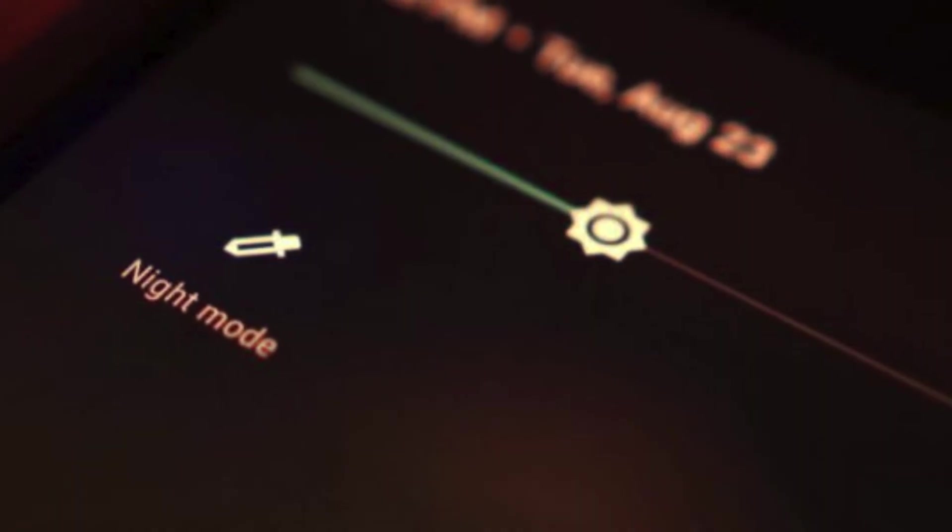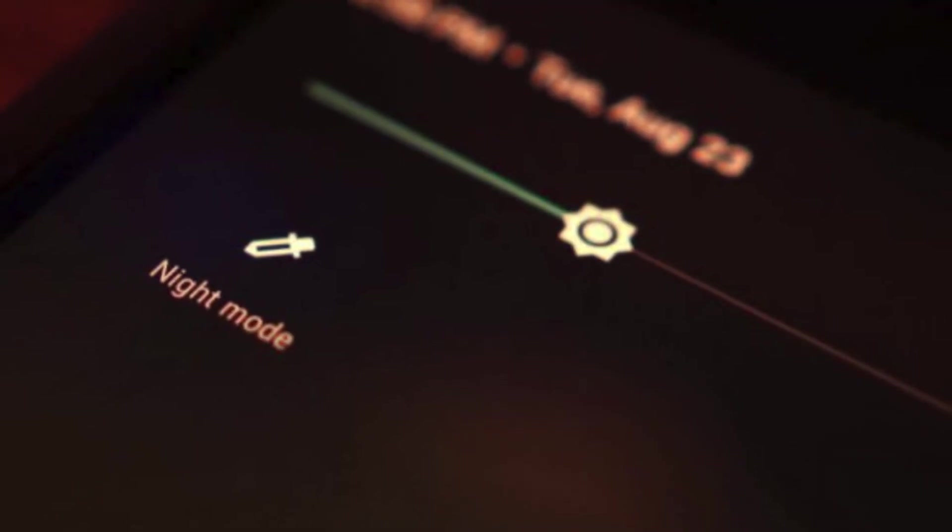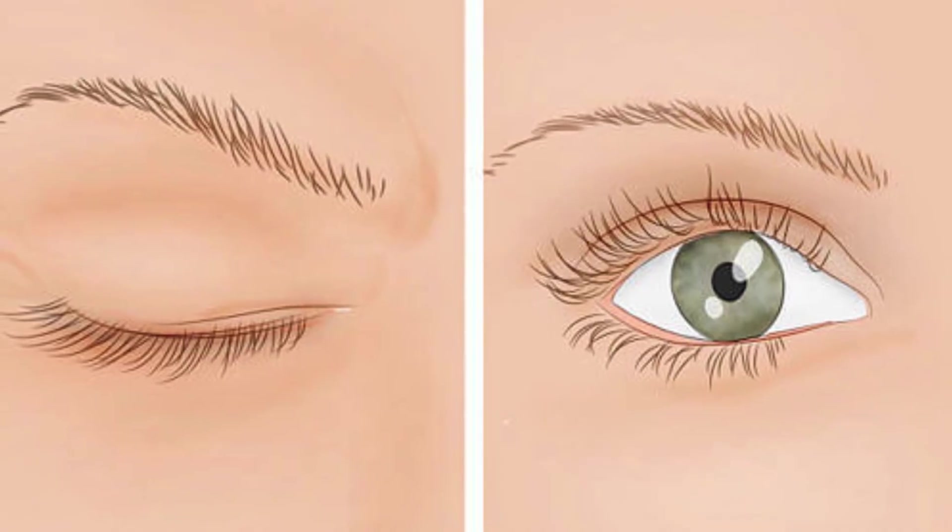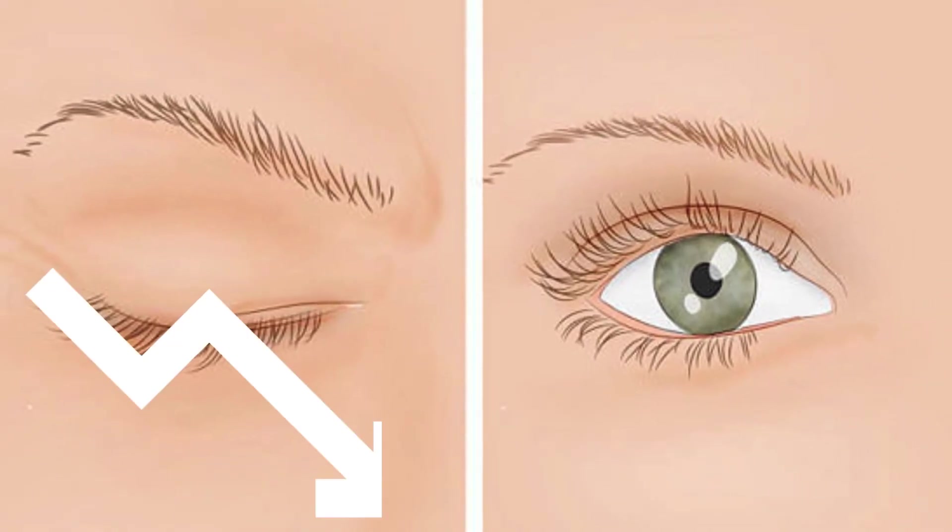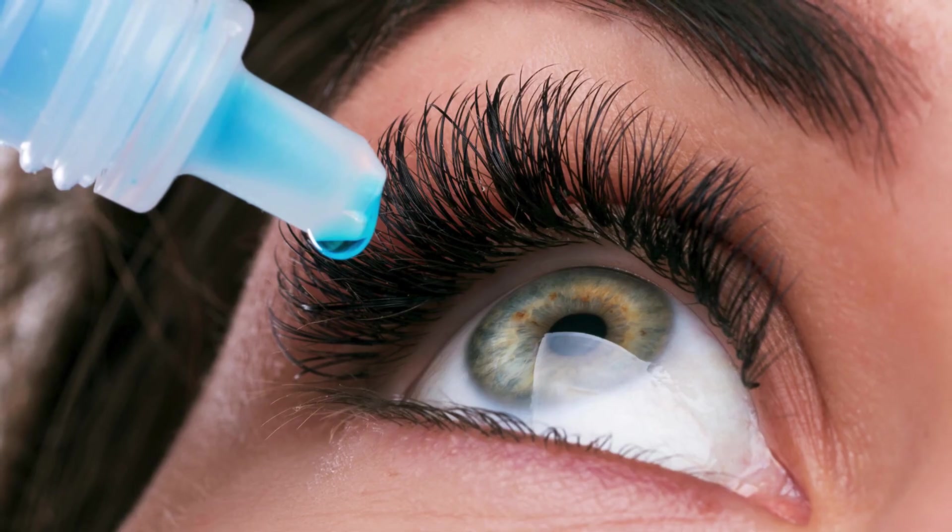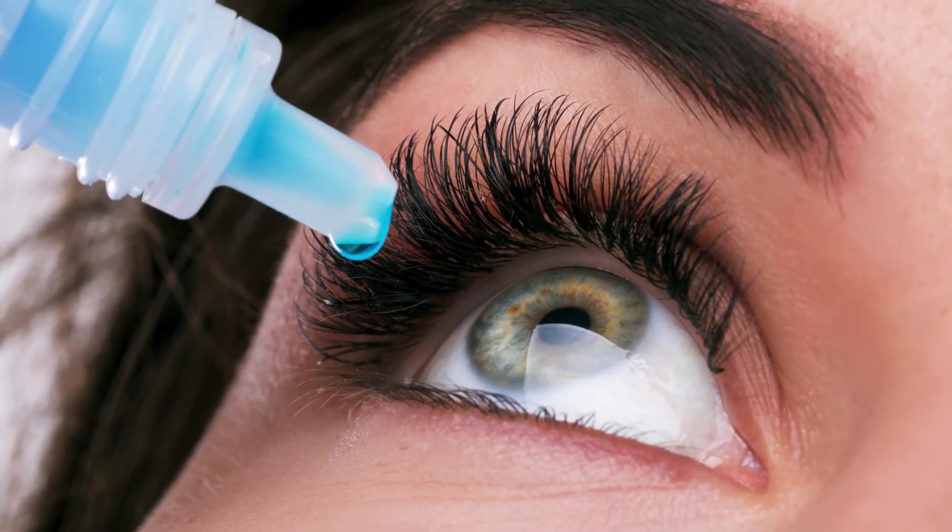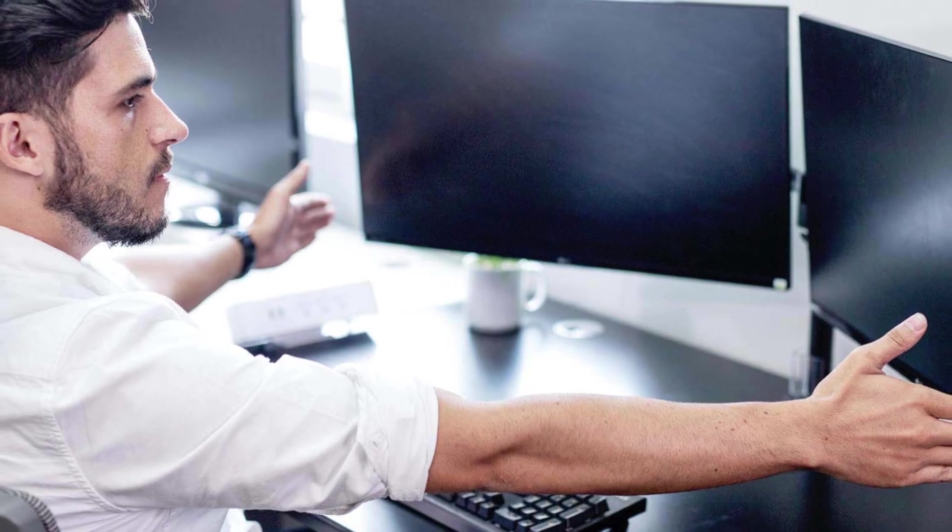Enable night mode on your devices to reduce blue light emission, especially in the evenings. Consciously blink to keep your eyes lubricated and reduce dryness. Use lubricating eye drops if your eyes feel dry or irritated.